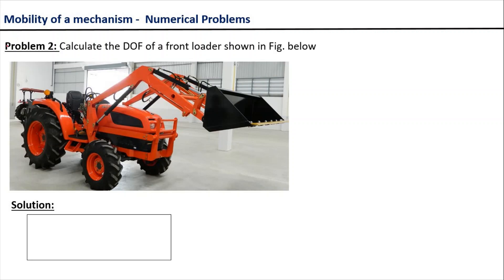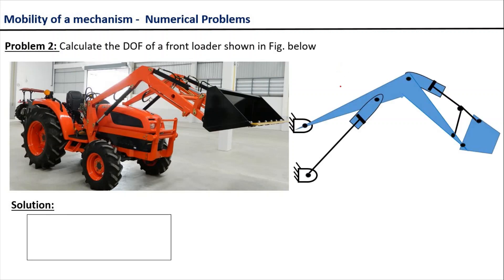Here you have been shown a front loader, which is an example of an excavator. We are interested to calculate the degree of freedom of this front loader. The first step in calculating the degree of freedom is to draw the kinematic diagram, so let us draw the kinematic diagram of this front loader and look at its different components. The figure on the right hand side indicates the kinematic diagram of the excavator.